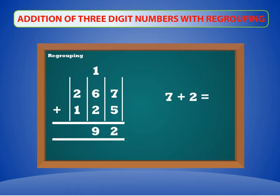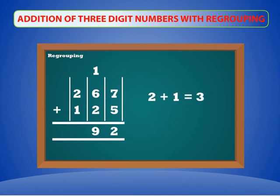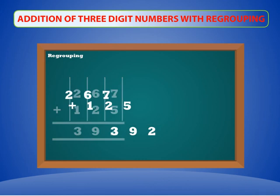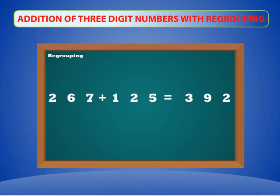Now next comes the hundreds column. 2 plus 1 is equal to 3. Place 3 in the hundreds column. So 267 plus 125 is equal to 392.